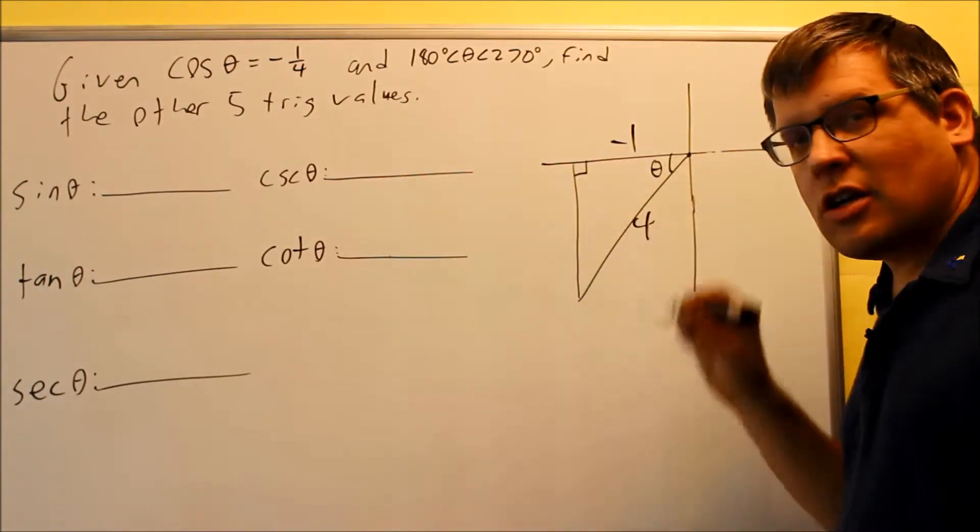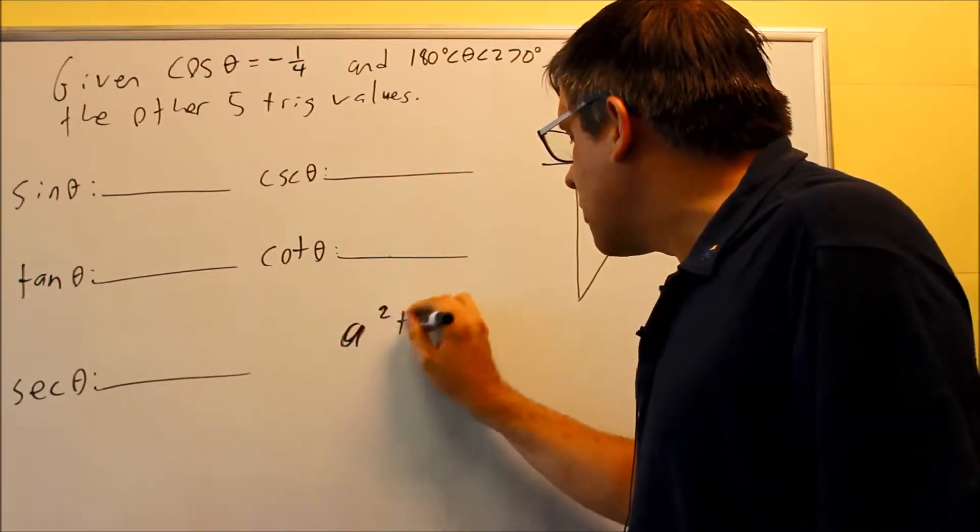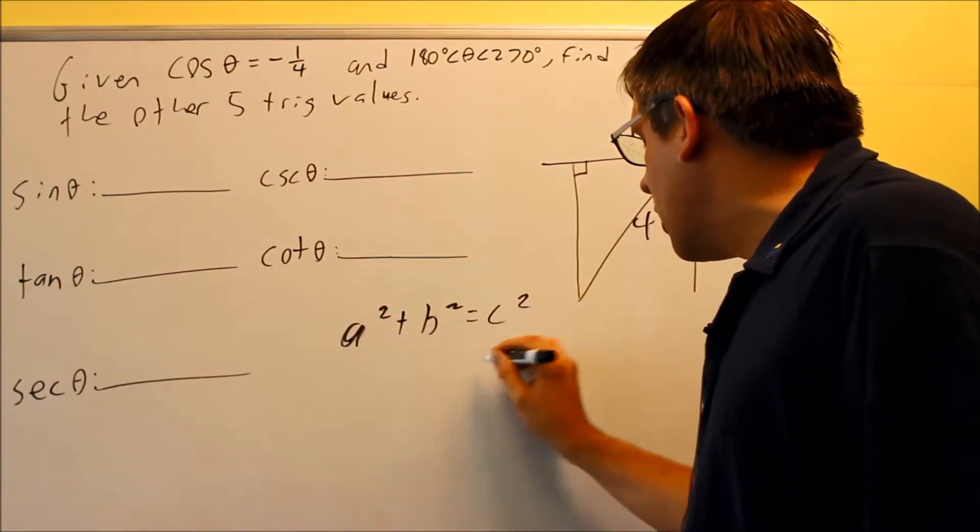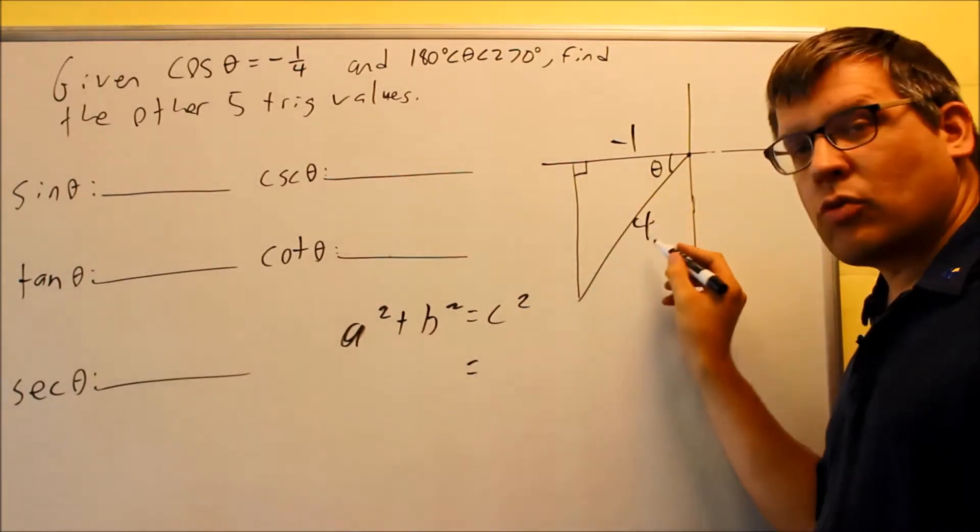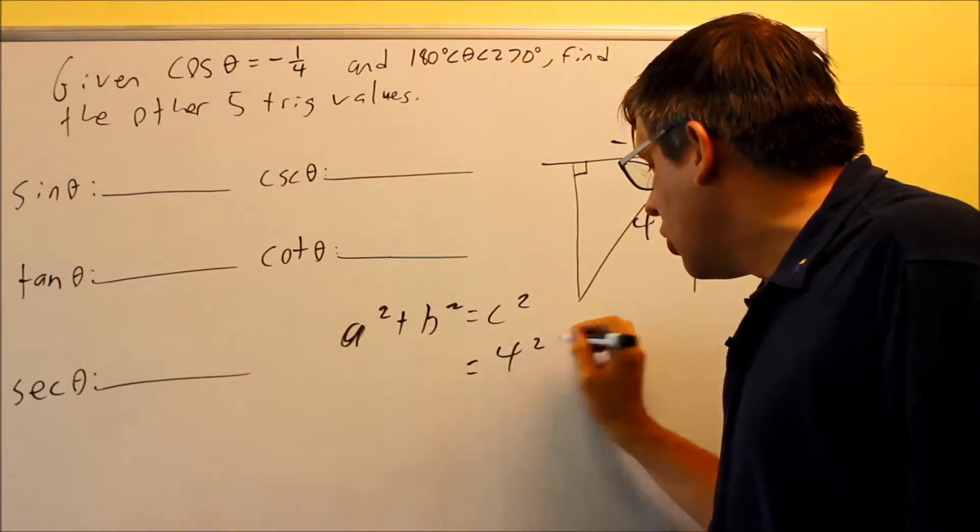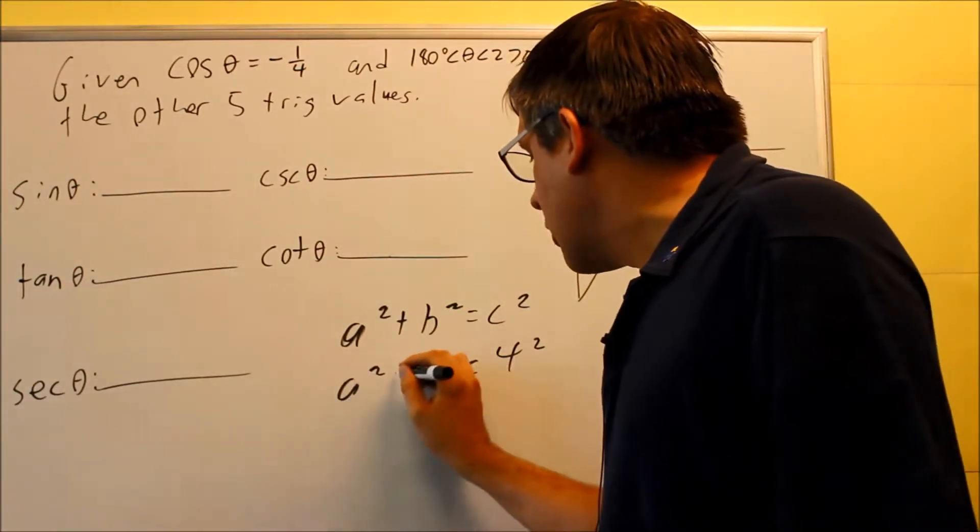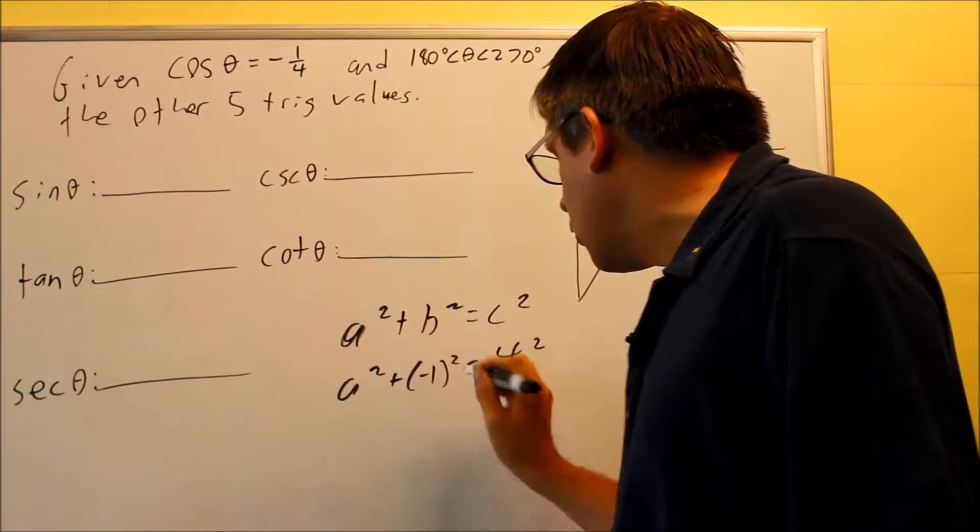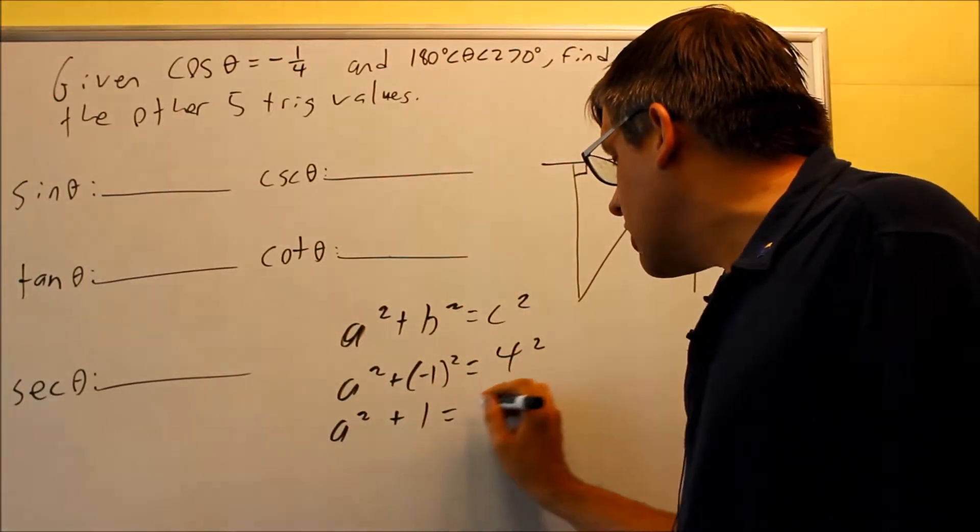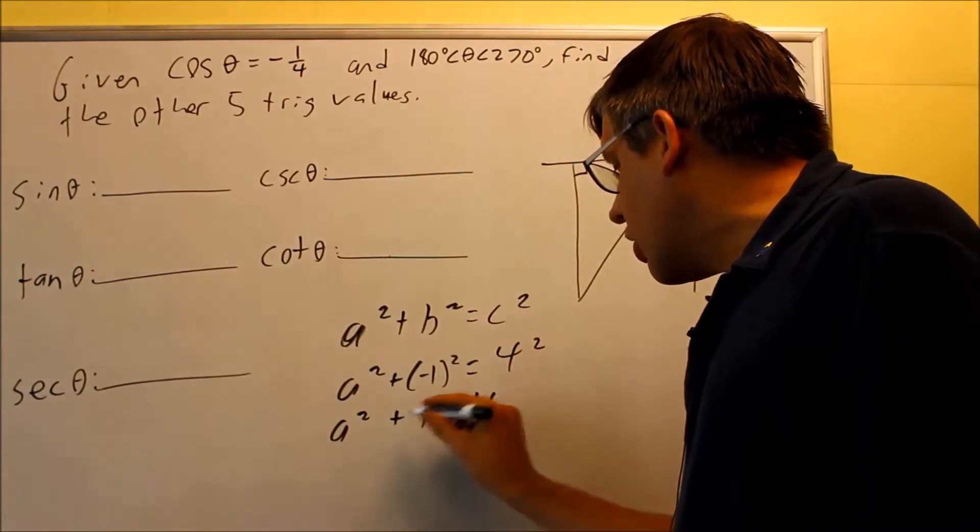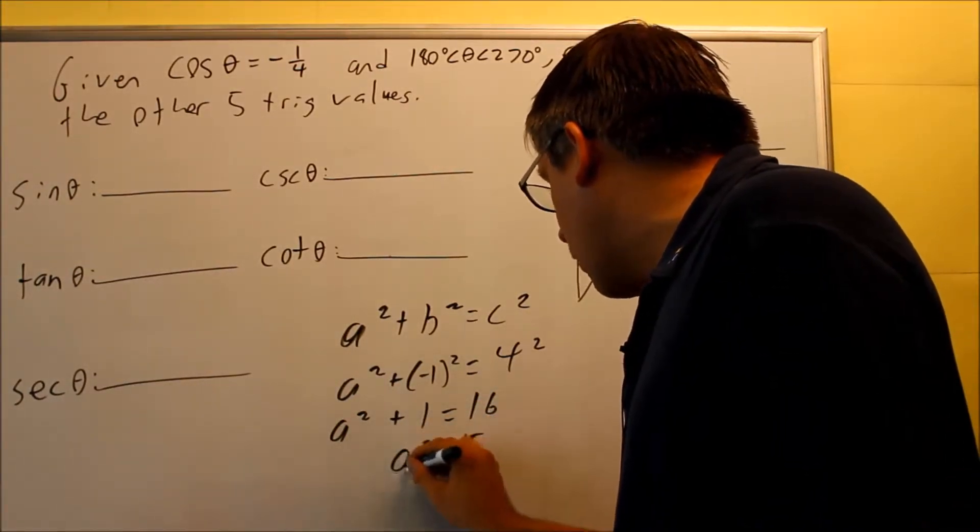We still need to figure out what this side is, and we're going to use Pythagorean Theorem for that. a squared plus b squared equals c squared. Your c is always the longest side of the triangle opposite the right angle, so we know that four will go in there for our c. So for the other one, we have negative one will go in there. And so when we work this out, we get a squared plus one is going to equal sixteen. We're going to subtract one from both sides, and we get fifteen for that one.